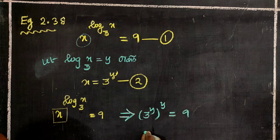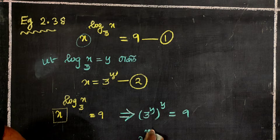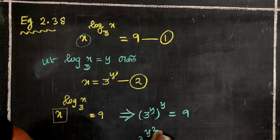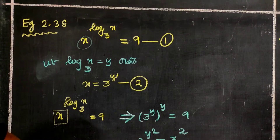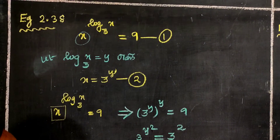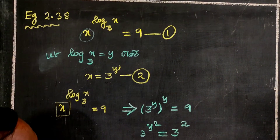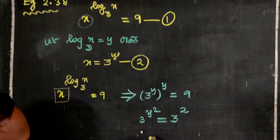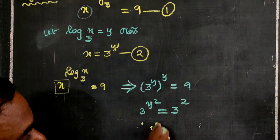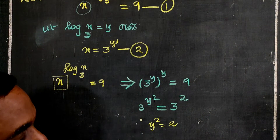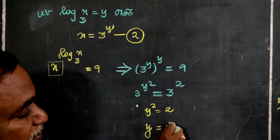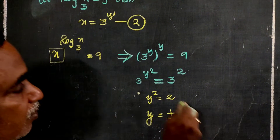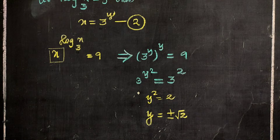Power multiplies with power. So 3 power y squared is equal to 9, which is 3 squared. Since the bases are equal, the powers must be equal: y squared equals 2. Therefore, y is equal to plus or minus root 2.